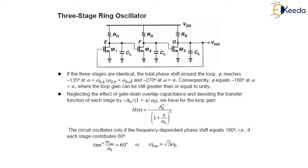As shown in the figure, if these 3 stages are identical, then the total phase shift around the loop — that is φ — reaches minus 135 degrees at ω equals ω_p, where ω_pf equals ω_pg. It reaches minus 270 degrees at a frequency of infinity. Consequently, φ reaches minus 180 degrees at ω less than infinity, where the loop gain can still be greater than or equal to unity.